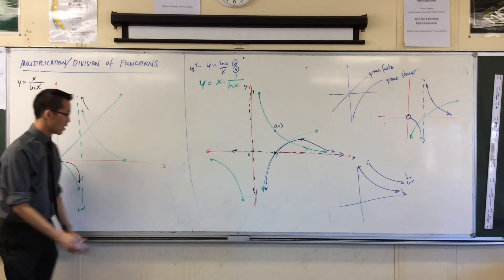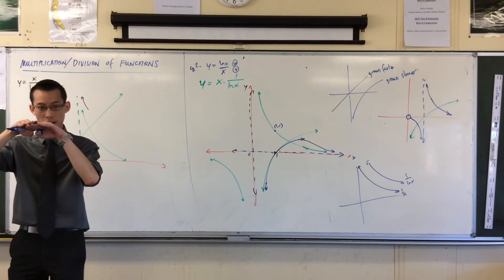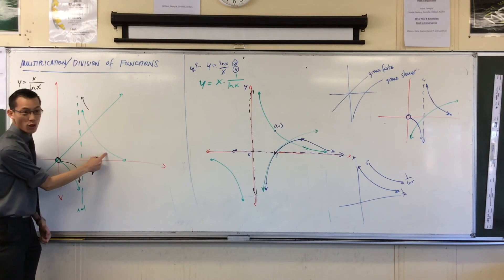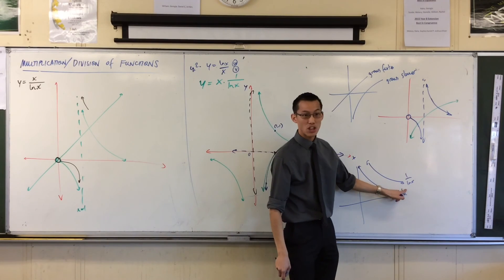Now, remember, we're comparing x with 1 over log x. If x and 1 over x were multiplied, you'd get a flat line. They're exactly matched, but 1 over log x isn't pulling as hard. He is shrinking, but he's shrinking slower.